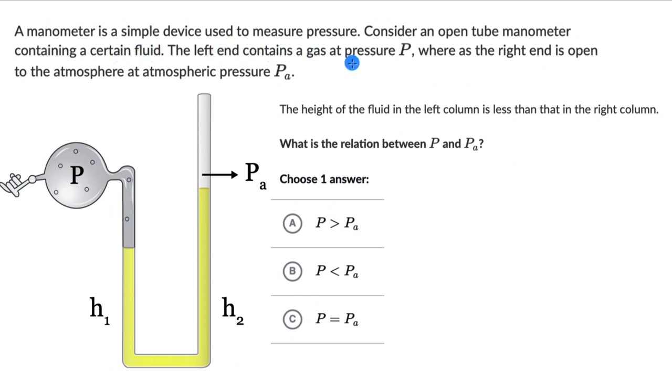The left end contains a gas at pressure P. We can see that over here. Whereas the right end is open to the atmosphere at atmospheric pressure PA. We can see that over here.